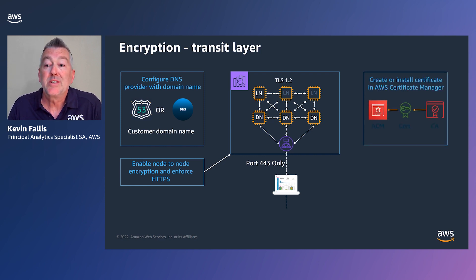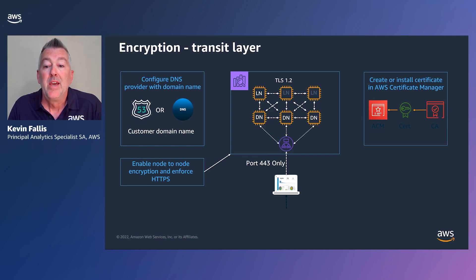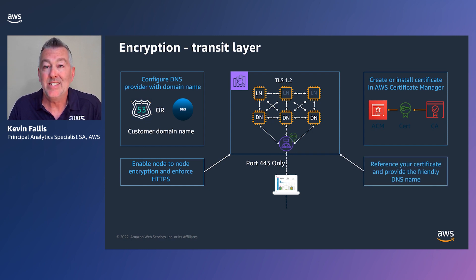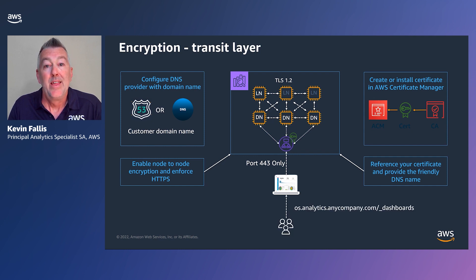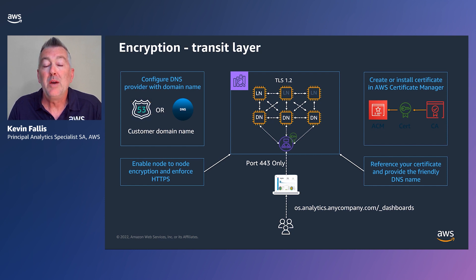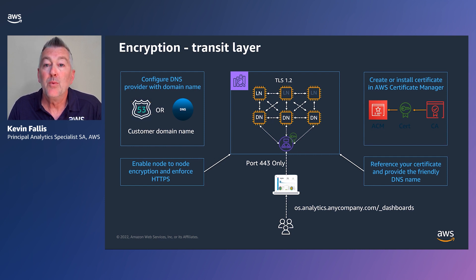To do this, you basically create or install a certificate on the AWS Certificate Manager. Once you've done that, you reference that certificate and provide the friendly DNS name that you want associated with your Amazon OpenSearch service cluster. Then your clients — accessing either dashboards or programmatically accessing your data — will be able to securely reference that data over the wire in flight through the transit layer using the mechanisms we've spoken about.